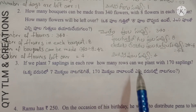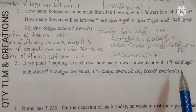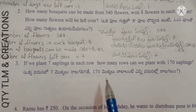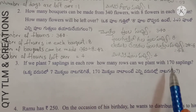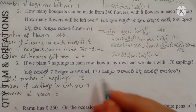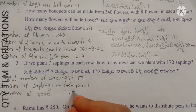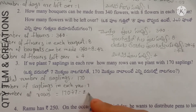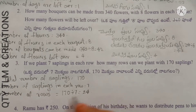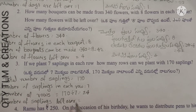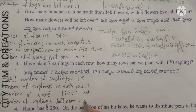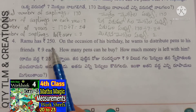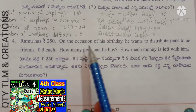Next question: if we plant 7 saplings in each row, how many rows can we plant with 170 saplings? Total saplings = 170. Number of rows = 170 divided by 7 = 24 rows. Number of saplings left over = 2.